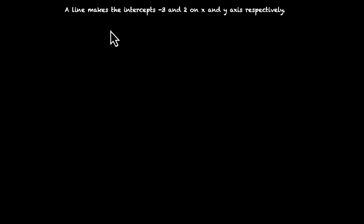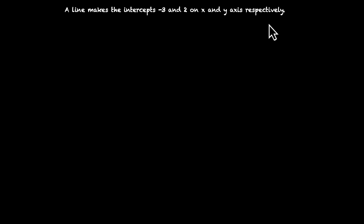In this video, we will learn how to find the equation of a line using the intercepts it makes with x and y axis. Here is an example: a line makes the intercepts minus 3 and 2 on x and y axis respectively. Find the equation of the line.